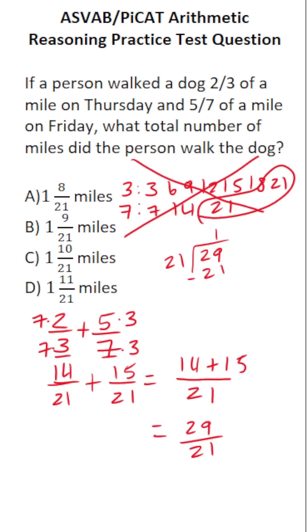21 goes into 29 one time without going over. One times 21 is 21. 29 minus 21 is 8. And just like that, we have enough to write our mixed number. This 1 is going to be our whole number. This remainder of 8 is going to be our numerator. And this 21 is going to be our denominator. So you can see that this one is A.